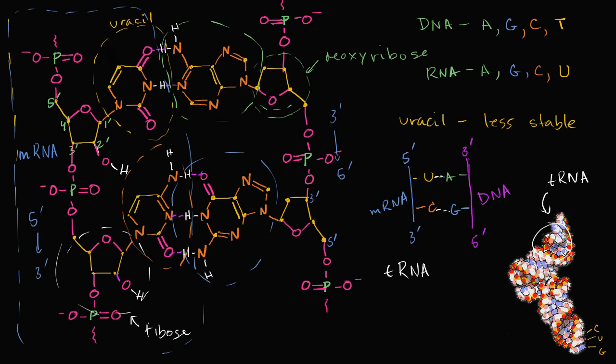Others include ribosomal RNA. They play a structural role in ribosomes, which is where translation occurs. You also have things called microRNA, which are short chains of RNA which could be used to regulate the translation of other RNA molecules.